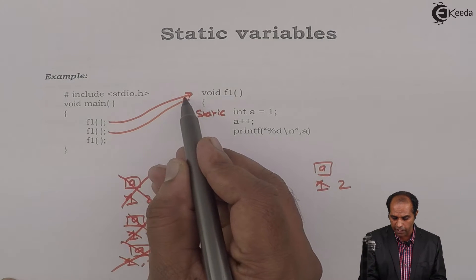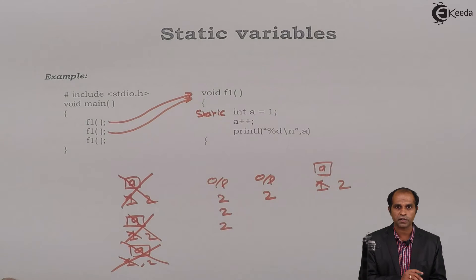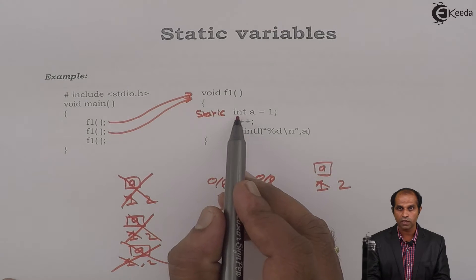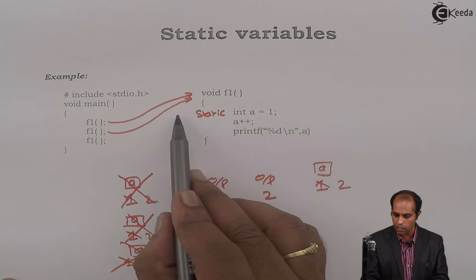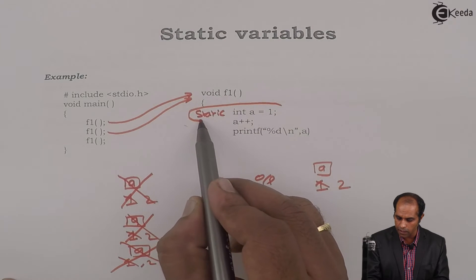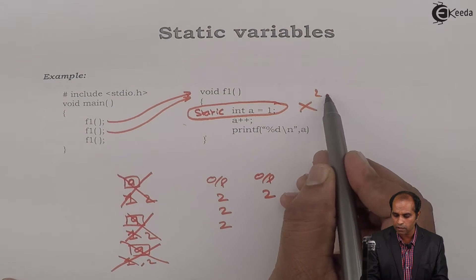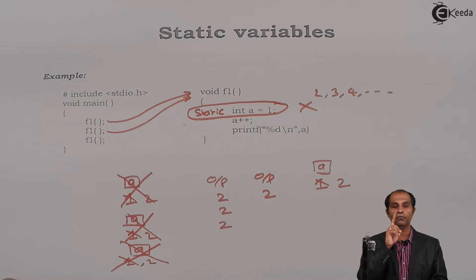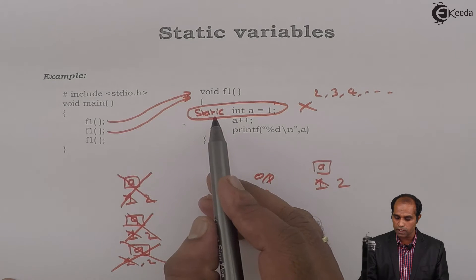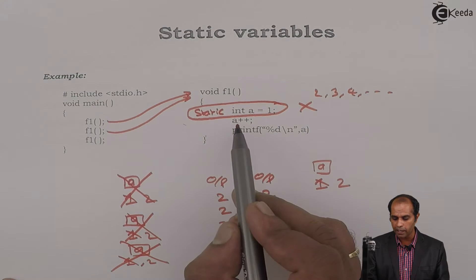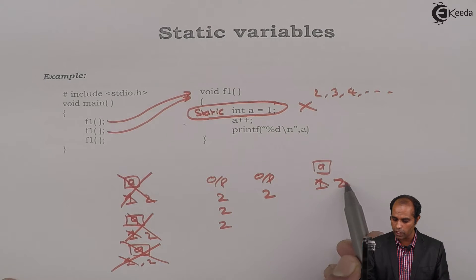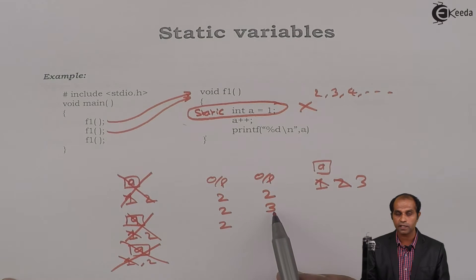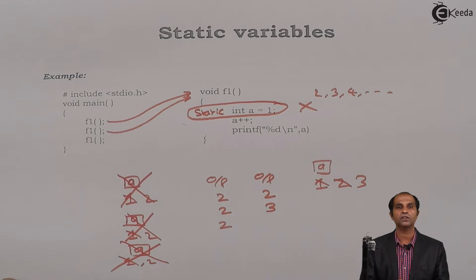When the function is called for the second time, the static declaration questions the function: are you being called for the first time? If yes, it executes; if no, this declaration will not work. So the static declaration will not work for the second, third, fourth, fifth calls and so on — it works only when the function executes for the first time. Since it is the second call, the declaration is skipped and execution goes directly to A++, so A changes to 3 and it displays 3. The function ends but variable A is not destroyed.